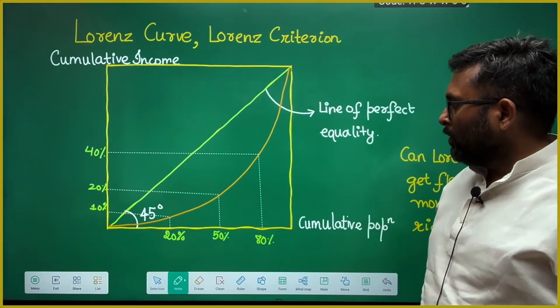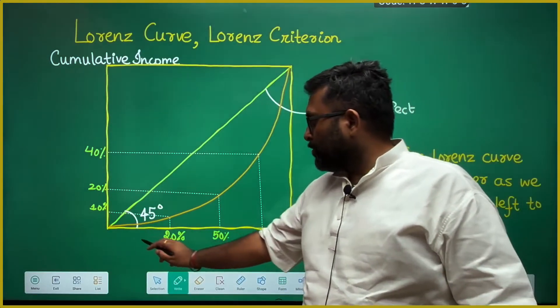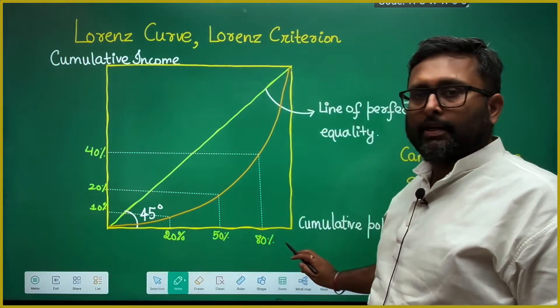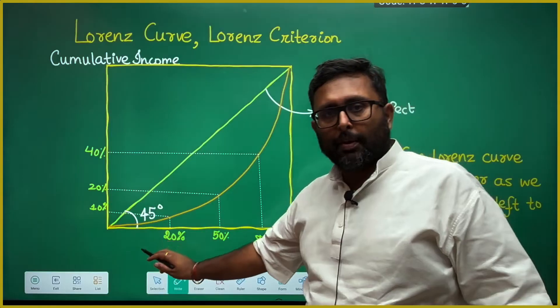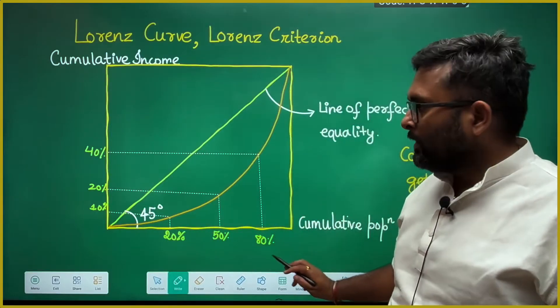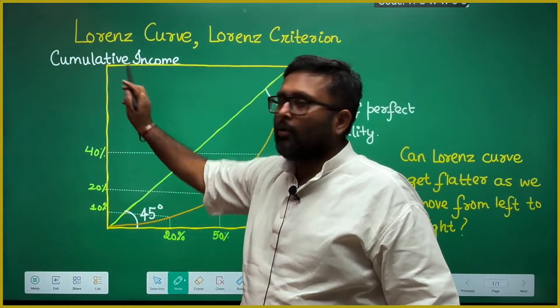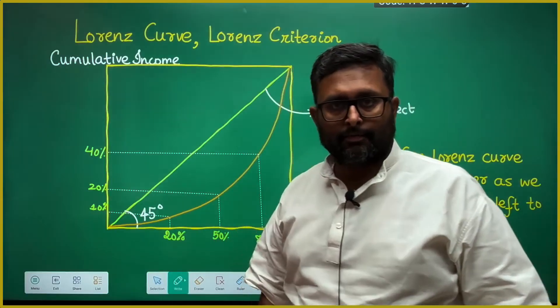So what do you do? You take the cumulative proportion of population on the x-axis and the cumulative proportion of income on the y-axis.